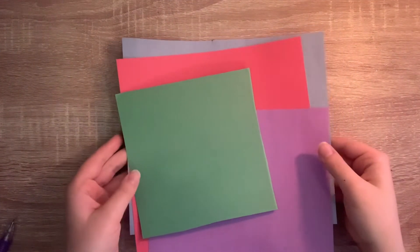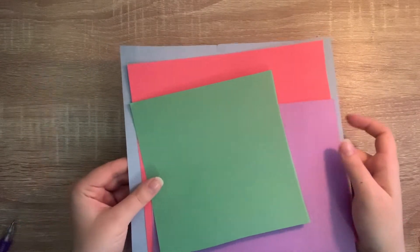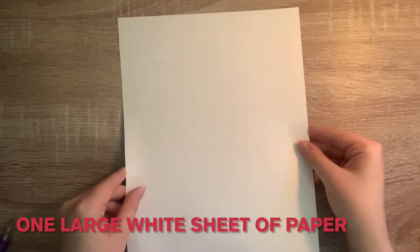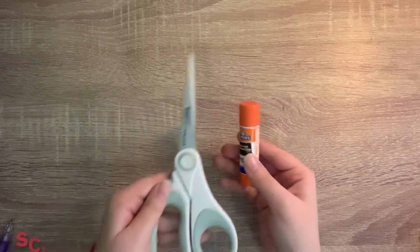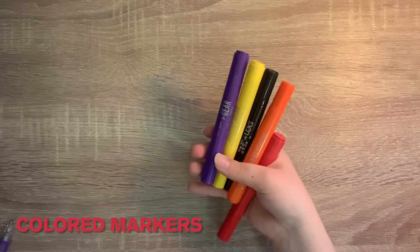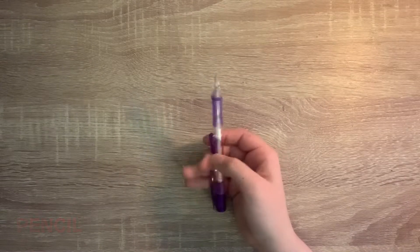For this activity you're going to need different colored construction paper. I have four different colors but you can use all the same color if you'd like. You are also going to need a large white sheet of paper to glue your robot on, some glue, scissors, a pen for writing, markers to decorate your robot, a pencil to write your answers, and lastly a ruler.